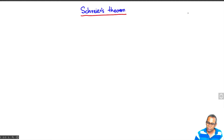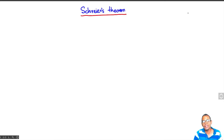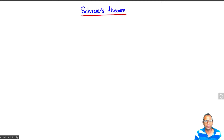Our objective is to prove the Jordan-Hölder theorem, and the path we'll take is via a theorem called Schreier's theorem, which is a very general theorem with no assumptions on the ring R whose modules we are considering. So let's look at Schreier's theorem.